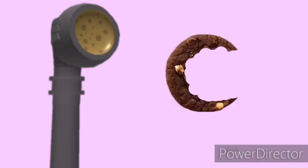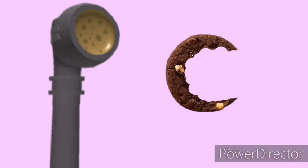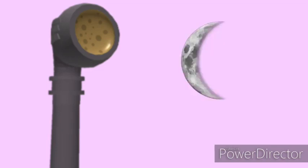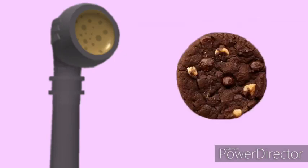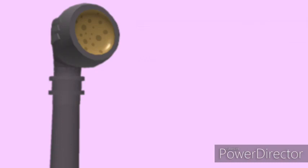Hey, you know what? A round cookie with one bite out of it looks like a C. A round donut with one bite out of it also looks like a C, but it is not as good as a cookie. The moon sometimes looks like a C, but you can't eat that. So C is for Cookie, that's good enough for me. Yeah, C is for Cookie, that's good enough for me. C is for Cookie, that's good enough for me.